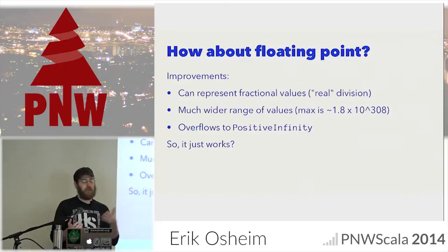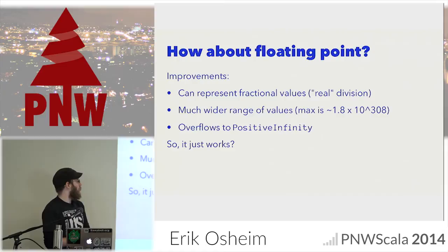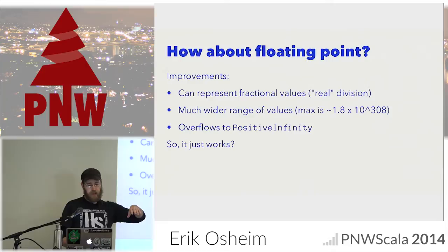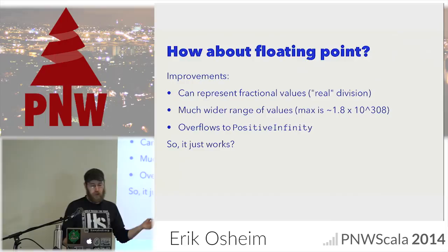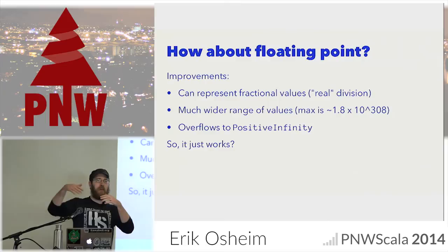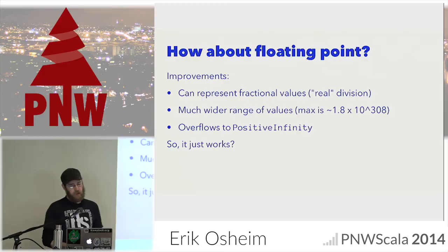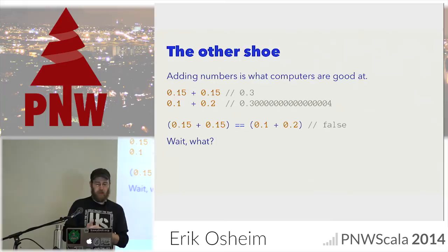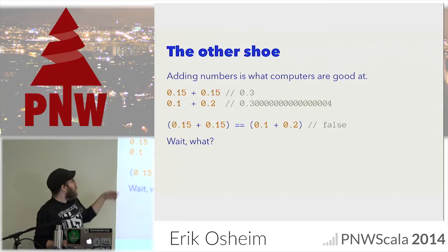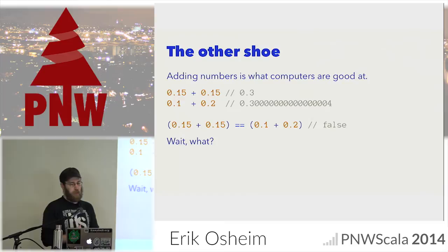How about floating point? It's a big improvement — we can represent fractional values, and there's a much wider range. The largest Double is around 10 to the 308th power. These types also overflow to positive or negative infinity rather than wrapping around, which is nice — your loop would exit rather than running forever since infinity is bigger than everything.